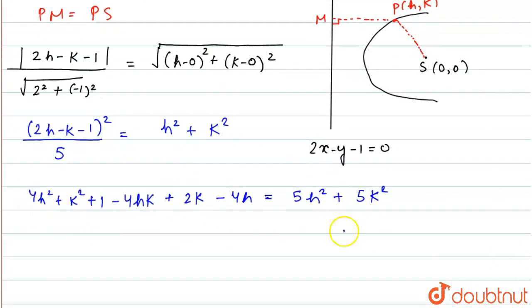Now, by solving this, this will become 4h squared minus 5h squared, which is minus h squared, then k squared minus 5k squared is minus 4k squared.